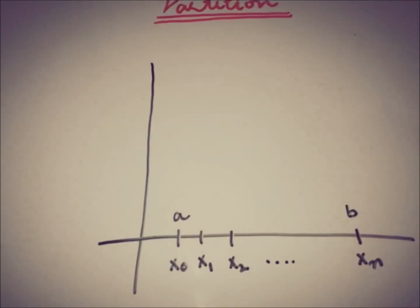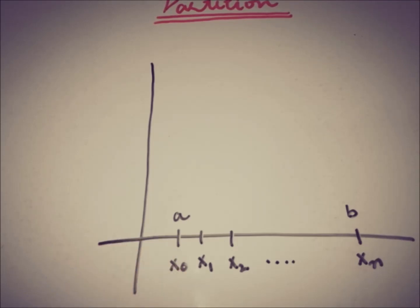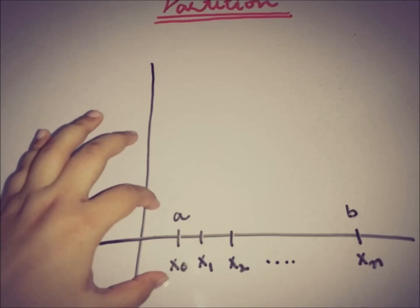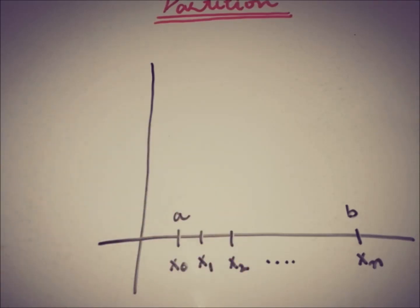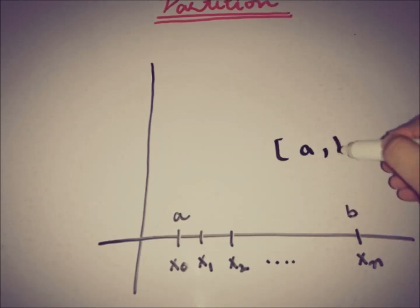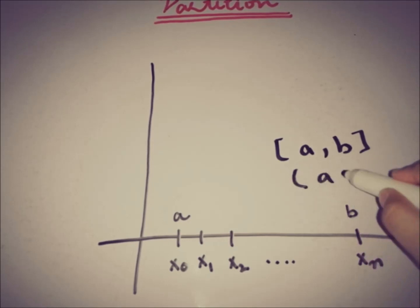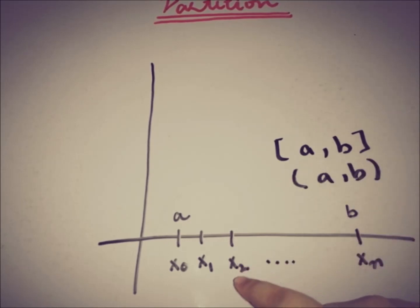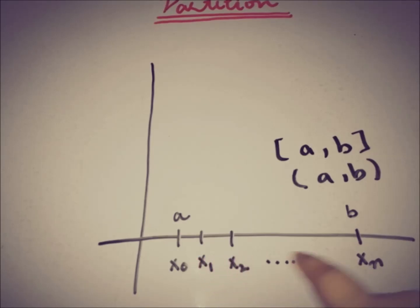Here we have a real line with elements x0 to xn. For a finite set of elements containing x0 and xn, I am denoting x0 with 'a' and xn with 'b' — just for simplicity, since we are familiar with intervals of the form [a, b] for closed and (a, b) for open intervals.